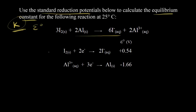Let's start with this first half reaction here, where we see solid iodine gaining electrons — so it's being reduced to turn into iodide anions. The standard reduction potential for this half reaction is positive 0.54 volts. We can see that's what's happening in our redox reaction: solid iodine on the left side and iodide anions on the right side. So we're going to keep this reduction half reaction.